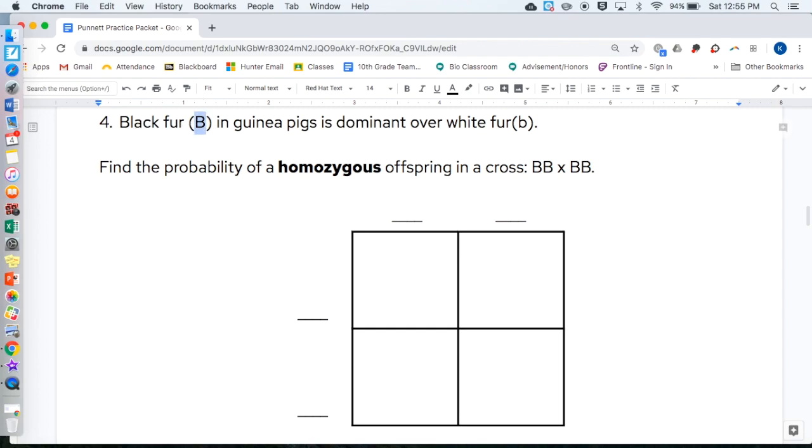Black fur, capital B, in guinea pigs, is dominant over white fur, lowercase b. Find the probability of a homozygous, meaning two of the same, whether it's capital or lowercase, offspring, in a cross of capital B, capital B, and capital B, capital B. So, I'm just going to show you a sample here, and then you're going to do the square yourself, but you can type on the line. I made it.